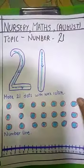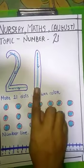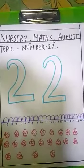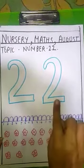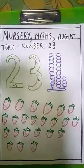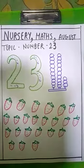This is number 21, 2, 1, 21. 21 after 2, 2, 22 and 22 after 2, 3, 23.